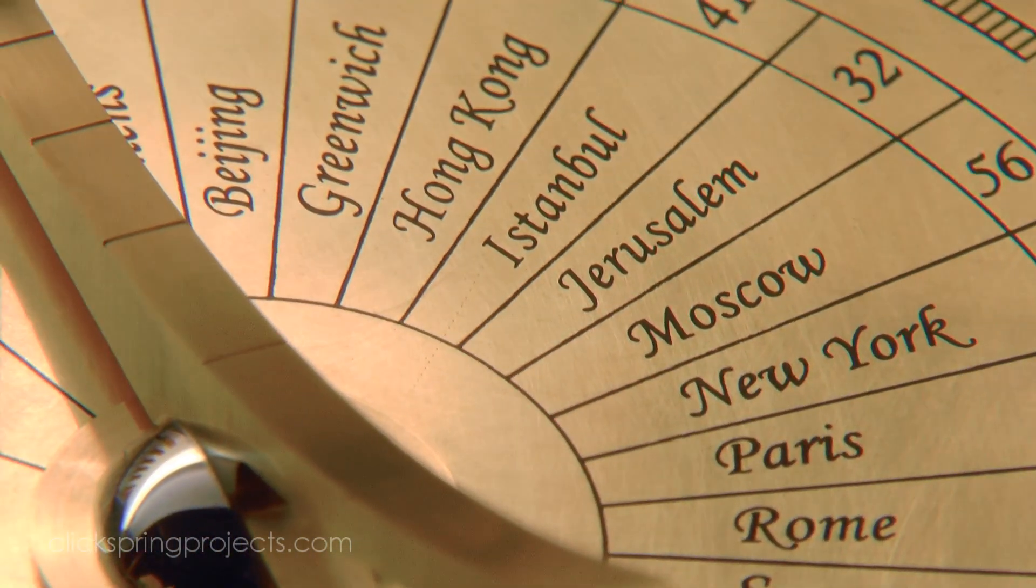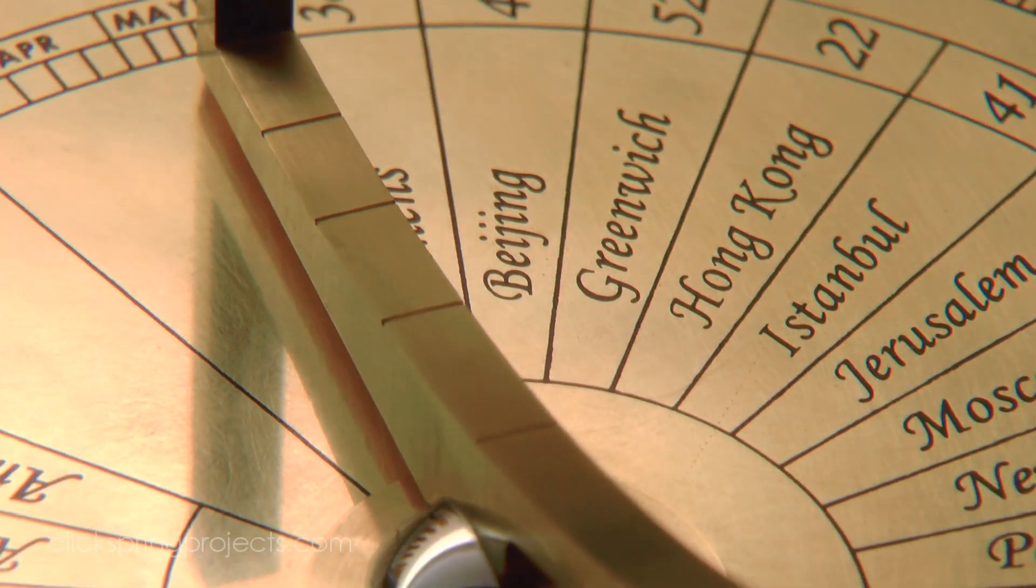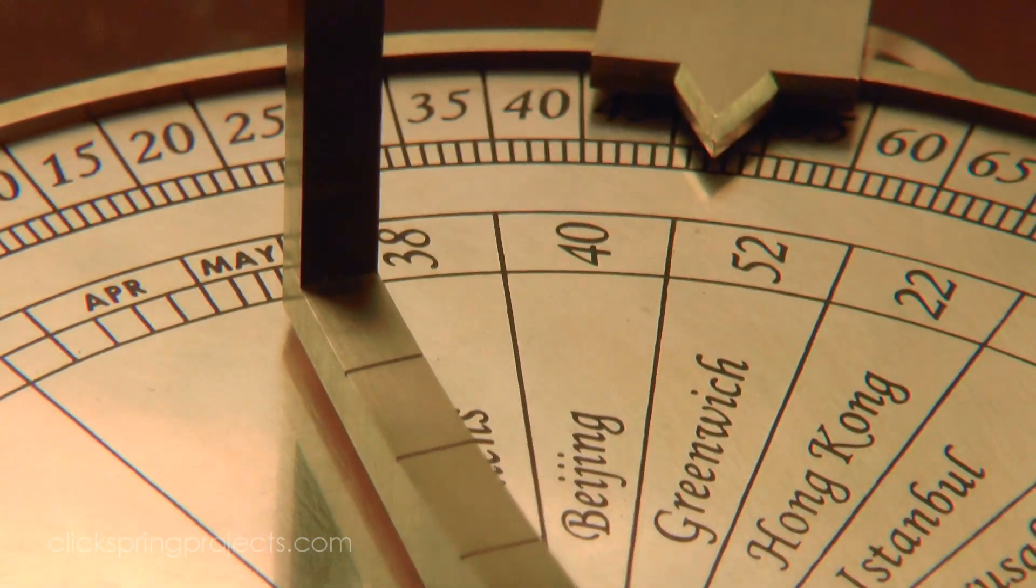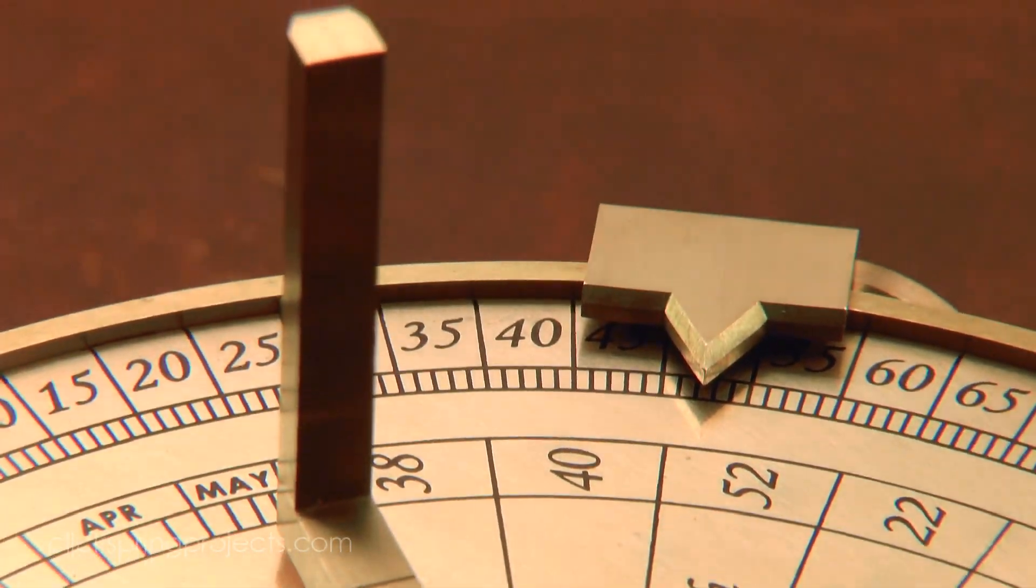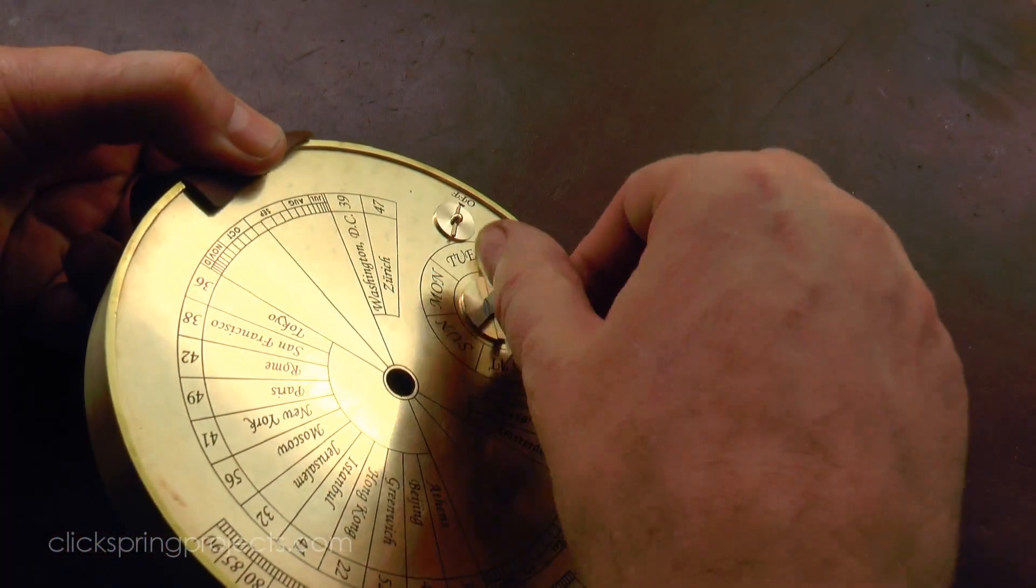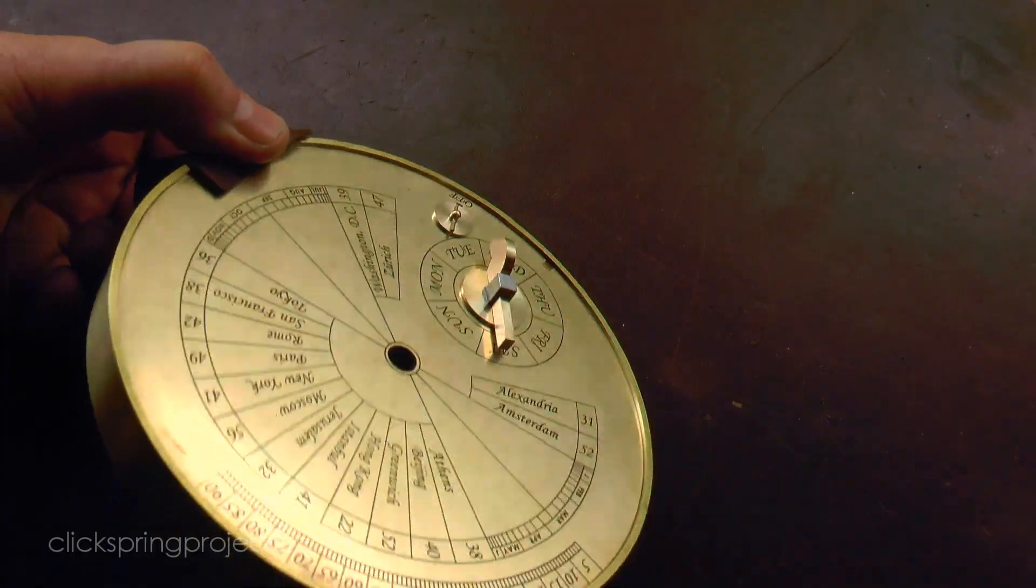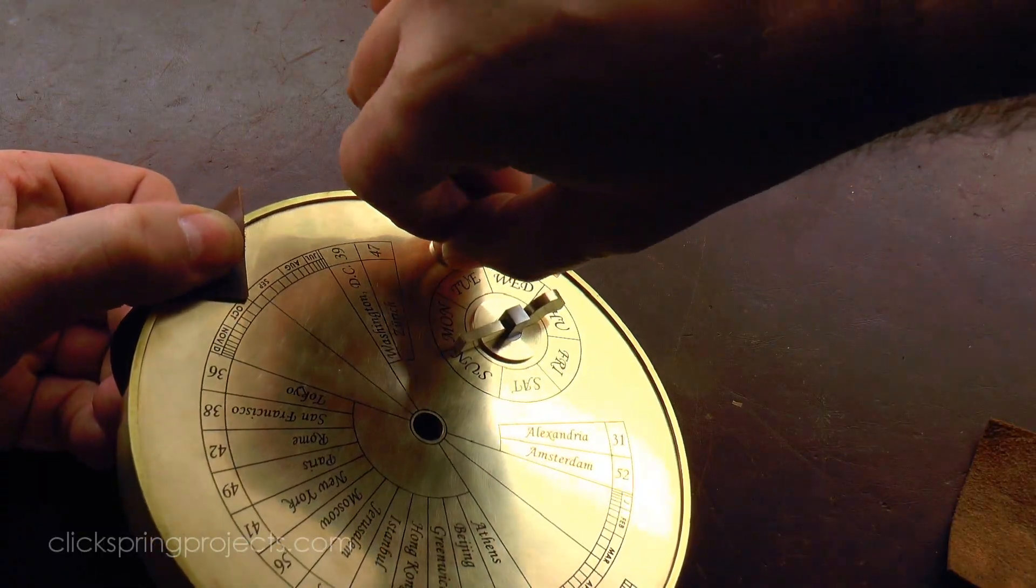English replaces ancient Greek on the displays, and modern city names have been used on the latitude table. I've also added a small ratchet disengage cam, to permit rapid scrolling forwards and backwards in time, when predicting eclipses.